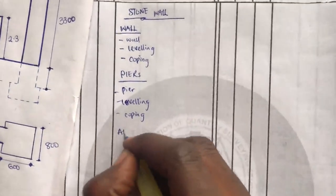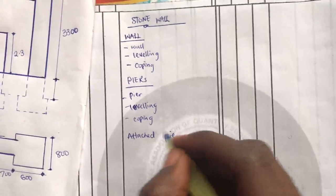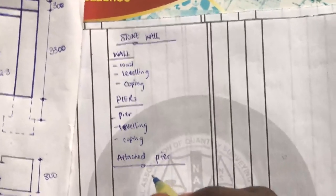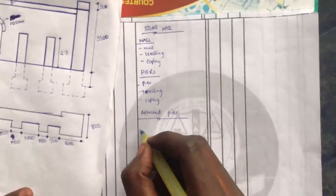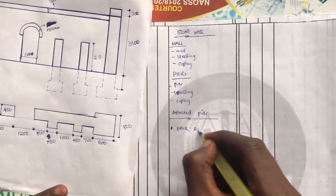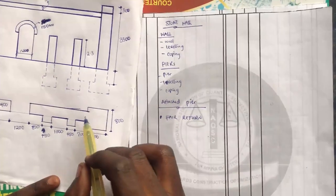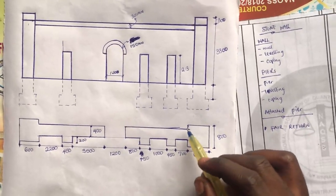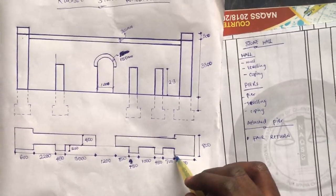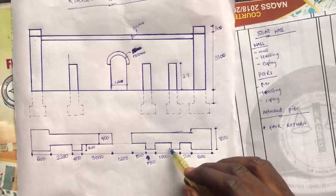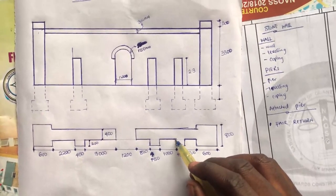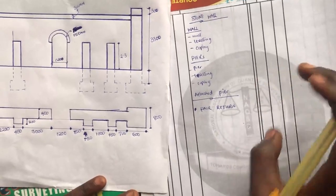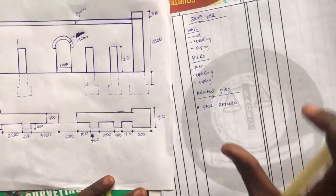After measuring coping for the pyres, we will move down to attached pyres, measure them, and under attached pyres we will make an adjustment for the opening — I will explain better when we get there. We will then consider a section called fair return. Return in this case indicates the part of your pyres attached to the wall, which is expected to be smoothened to give a 90-degree smooth attachment to the wall. Last but not least, I will be showing us something called semi-cycler centering; we'll look at how to work on it when we get there.